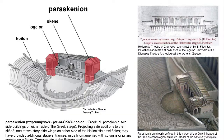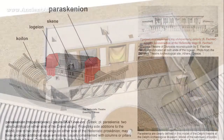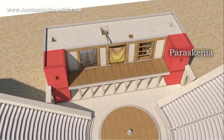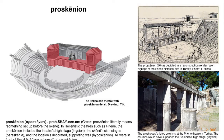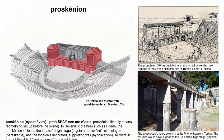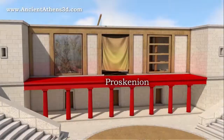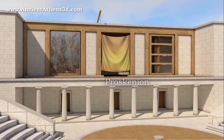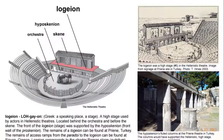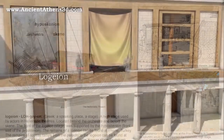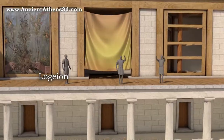8. Parascenia: a projecting area on the ends of the skene to provide additional entrance for the stage. 9. Proscenium: a row of columns supporting an additional high stage. 10. Logeion: an additional high stage.